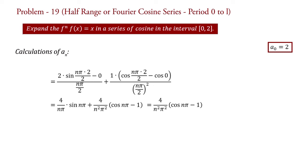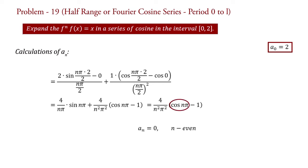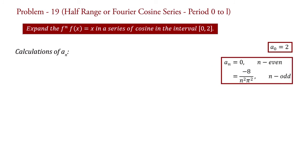If n is even, then cos(nπ) = 1, so cos(nπ) − 1 = 0, and therefore an = 0 for n even. If n is odd, then cos(nπ) = −1, so cos(nπ) − 1 = −2, and therefore an = −8/(n²π²) for n odd.